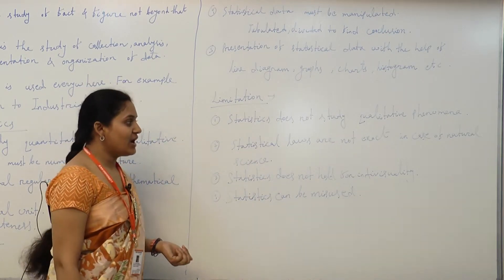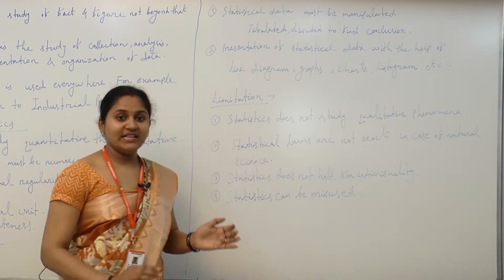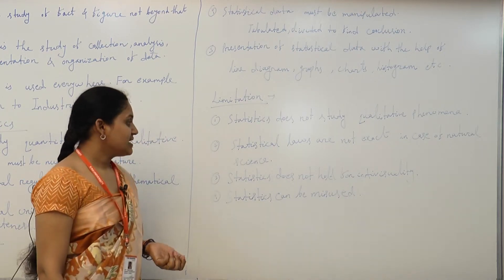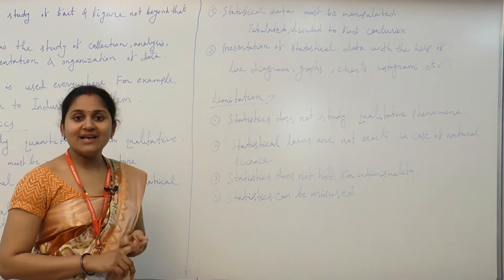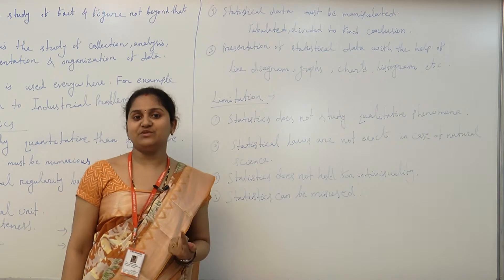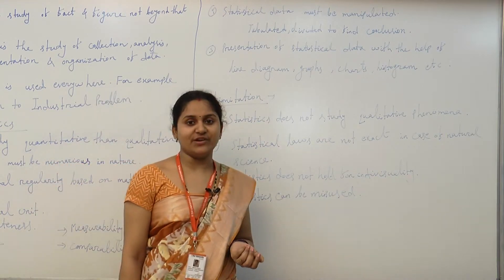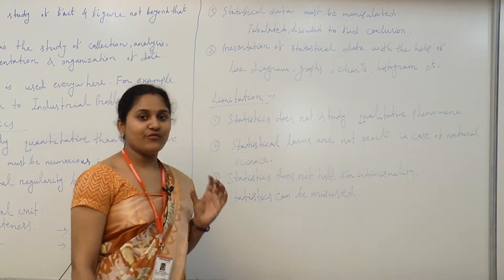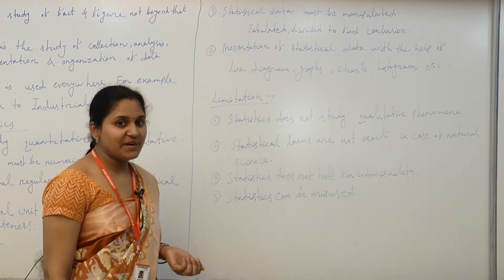Statistical laws are not exact. In the case of natural science there are many laws, but in the natural field we are not able to use their full originality. The third limitation is that statistics does not hold for individuality — we always need statistics for a group of individuals. For a single individual it is not possible to find meaningful data; with a single data point we cannot do anything, so it is a very big limitation.